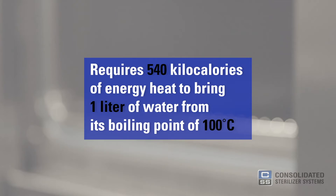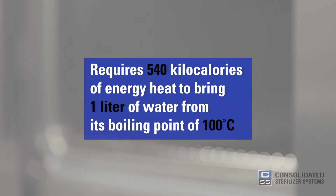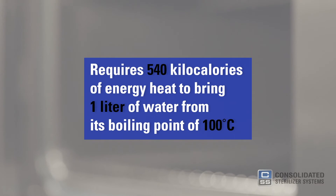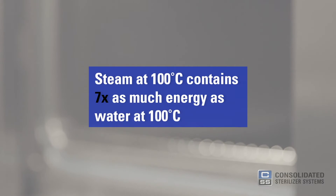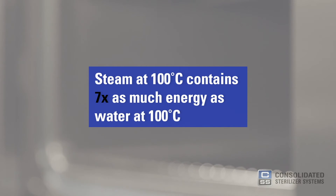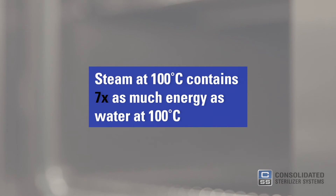It requires 540 kilocalories of energy to bring 1 liter of water from its boiling point of 100 degrees Celsius and make it steam, which means steam at 100 degrees Celsius contains 7 times as much energy as water at 100 degrees Celsius. All of this energy will be instantly transferred to the product being sterilized when the steam condenses on the object. This heats up cells far more efficiently than air at similar temperatures, which is why we use steam to achieve sterility.